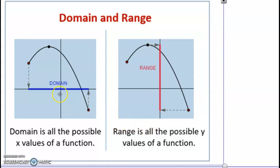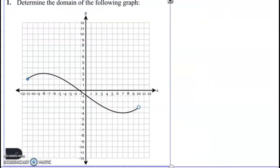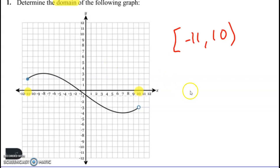Here it says determine the domain of the following graph. Since it's asking for the domain, we want to go from the farthest to the left to the farthest to the right, and then we'll write the interval notation. We've got negative 11 to positive 10 on the x-axis. Notice how the negative 11, because it has a filled in circle, gets a bracket, and the 10 with an open circle gets parentheses. That's your answer.